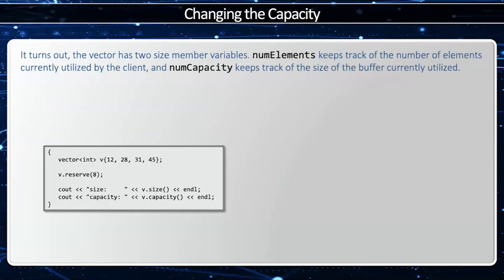Now it turns out the vector has two size member variables. numElements keeps track of the number of elements currently utilized by the client, and numCapacity keeps track of the size of the buffer currently utilized.